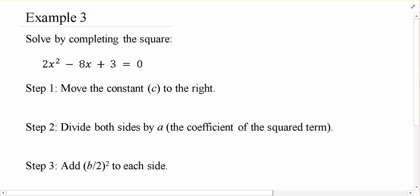So the first step that we always do with completing the square is to move the constant to the other side. So we have 2x² - 8x = -3 in this case.